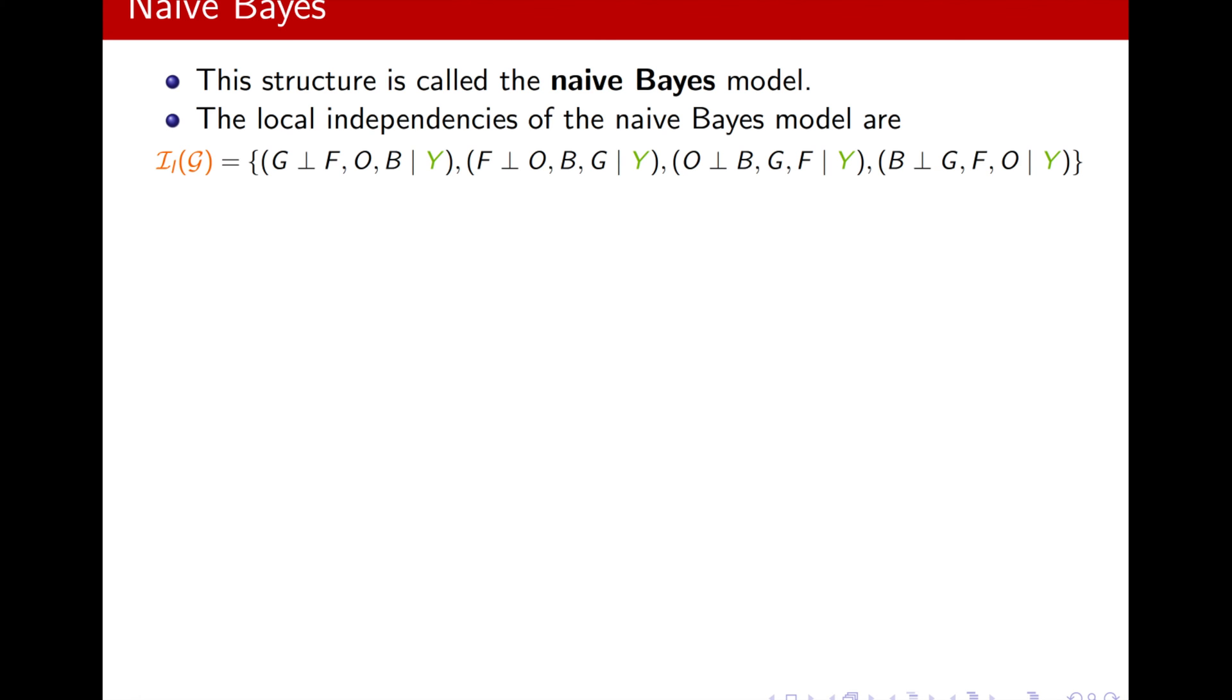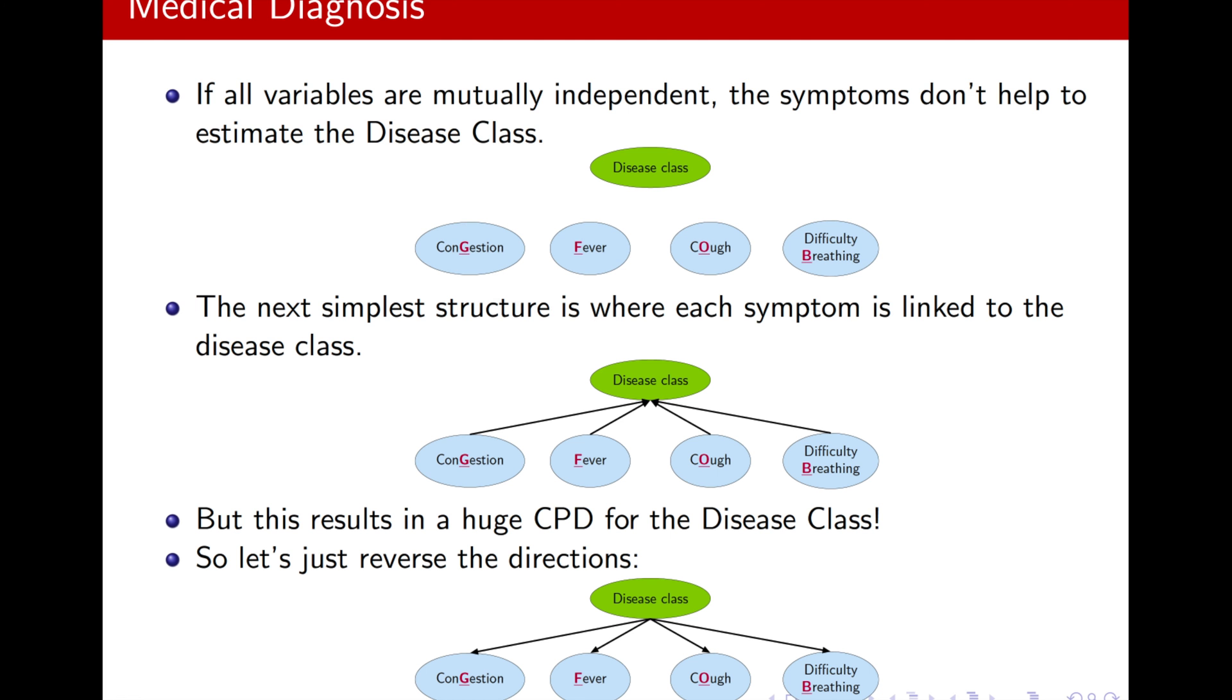What are the local independencies imposed? Well, they are basically, if you look at the graph, that each of the symptoms will become independent of the rest of the symptoms, condition on the disease class. They are d-separated.